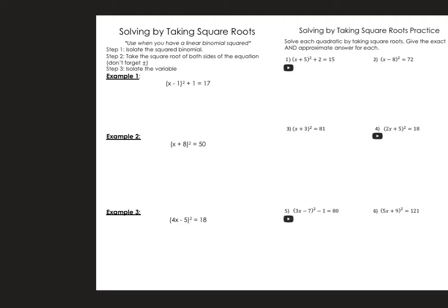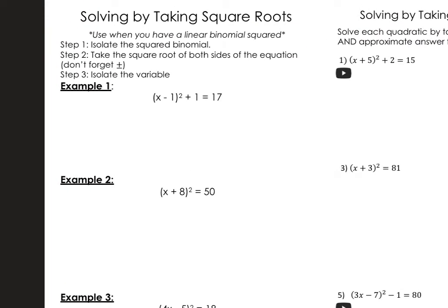Looking at example 1, the first thing we're going to do is isolate the squared binomial, so we're going to subtract 1 from both sides. Then I have x minus 1 squared equals 16, and then we're going to take the square root. The square root of 16 isn't just 4 — it's positive 4 and negative 4.